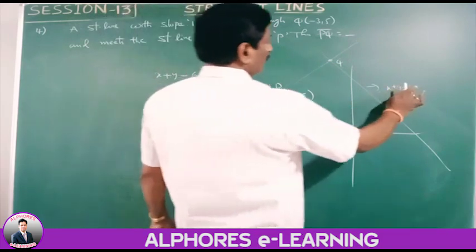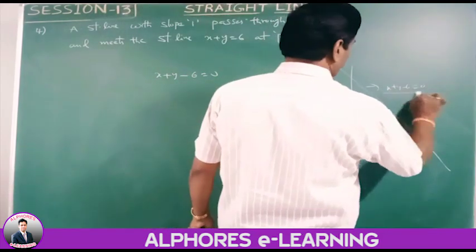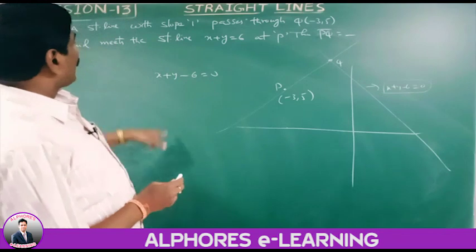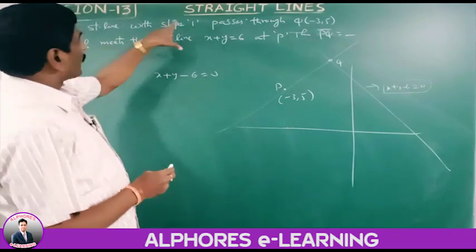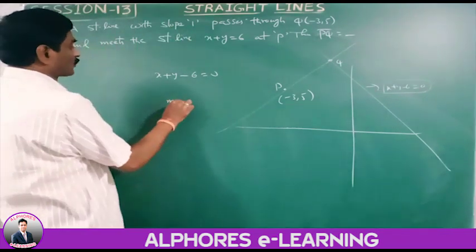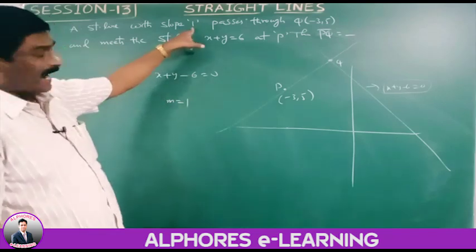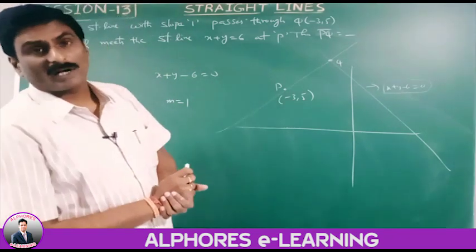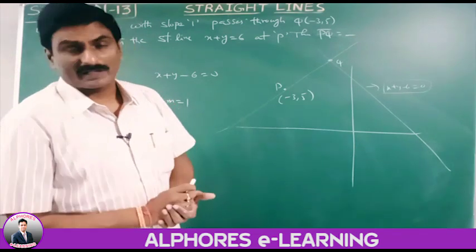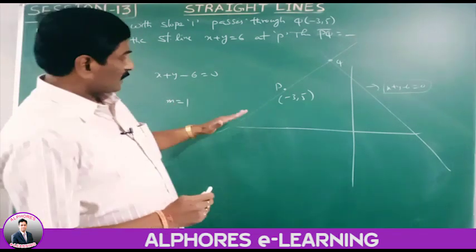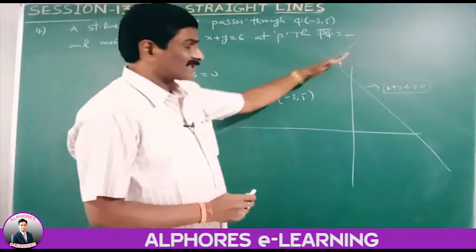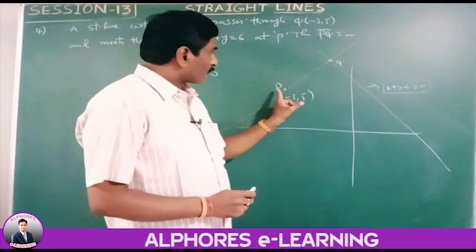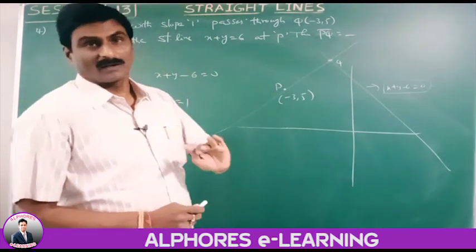Line 1 is x plus y minus 6 equals 0. Line 2 passes through (minus 3, 5) with slope m equals 1. Using y minus y1 equals m(x minus x1), we find the equation of line 2. Solving these two equations gives us point P, and then we find the distance PQ.